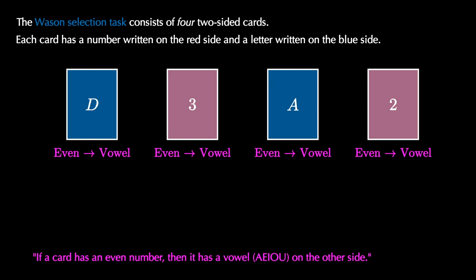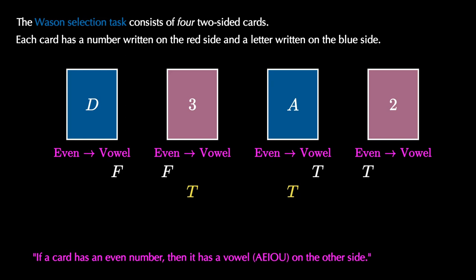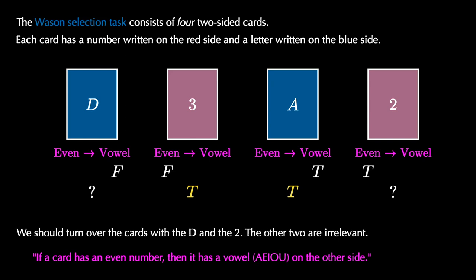We interpret this proposition as 'even implies vowel' and consider each card separately. The first card has a D — since it's not a vowel, the conclusion of the conditional is false. The second card has a 3, so the hypothesis is false. The third card has an A, so the conclusion is true. The fourth card has a 2, so the hypothesis is true. The second and third cards have truth values that make the conditional true regardless of the other side. Therefore, we need to turn over the first and fourth cards — D and 2 — to check for a true-implies-false situation, which is the only way the conditional is false.